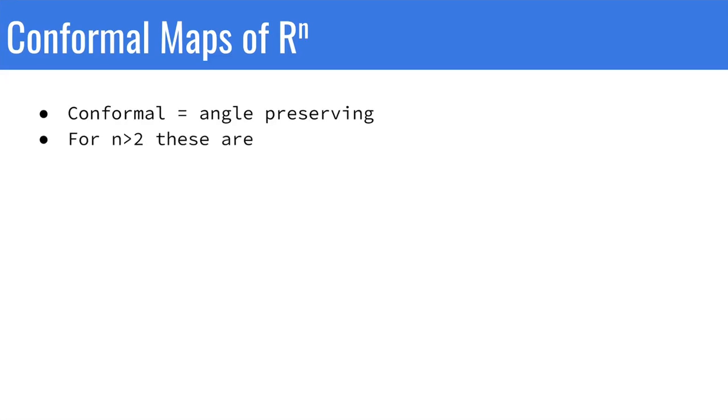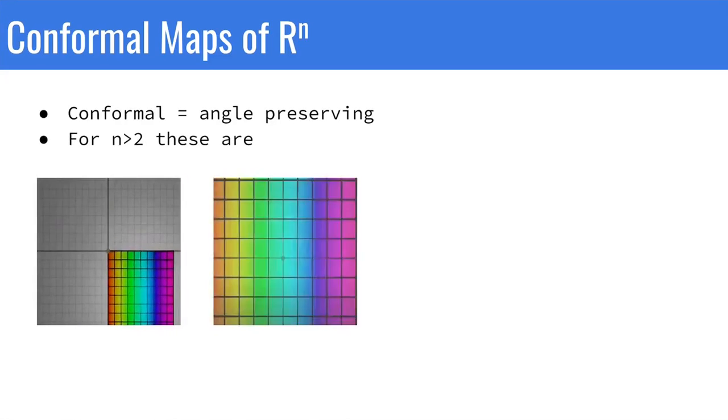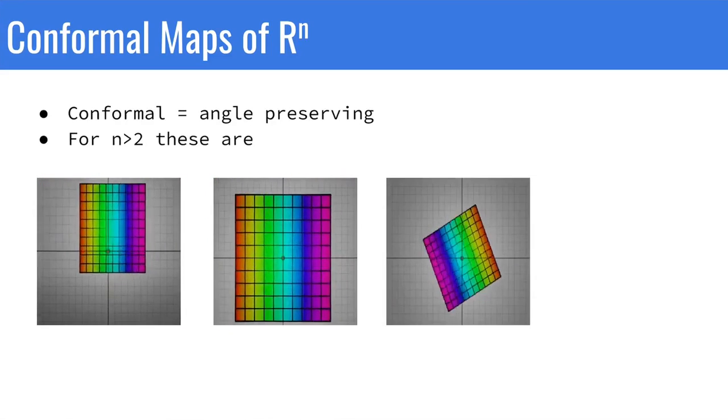We know that there are essentially four types of conformal maps: translations, dilations, rotations, and inversions.